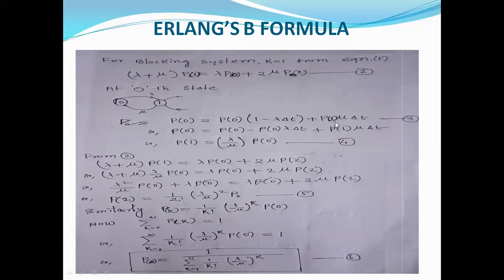Since total traffic A = lambda/mu, replacing lambda/mu with A: P(n) = (A^n / n!) / [sum from k=0 to n of (A^k / k!)]. This is the blocking probability, and this formula is called the Erlang B formula. P(N) here represents the probability that all N servers are busy, which is the blocking probability of the exchange.